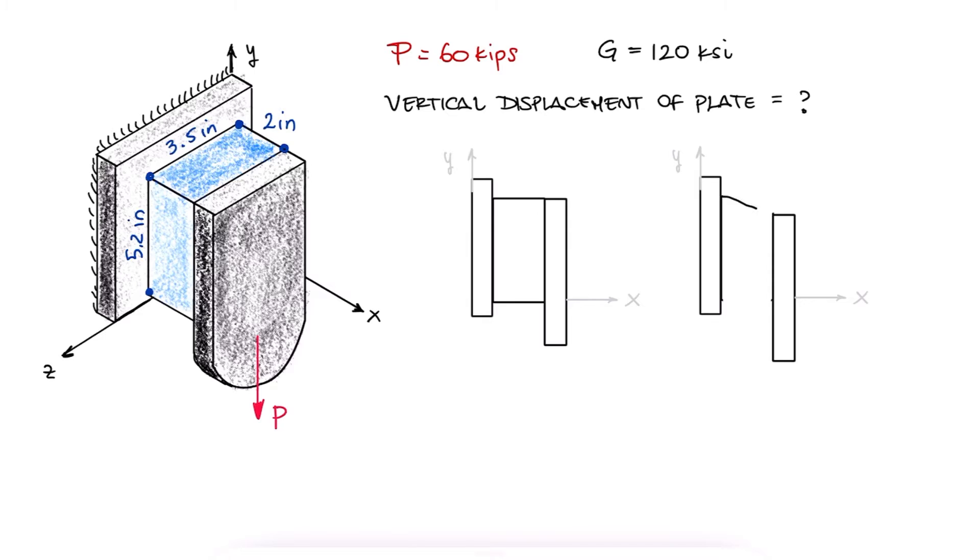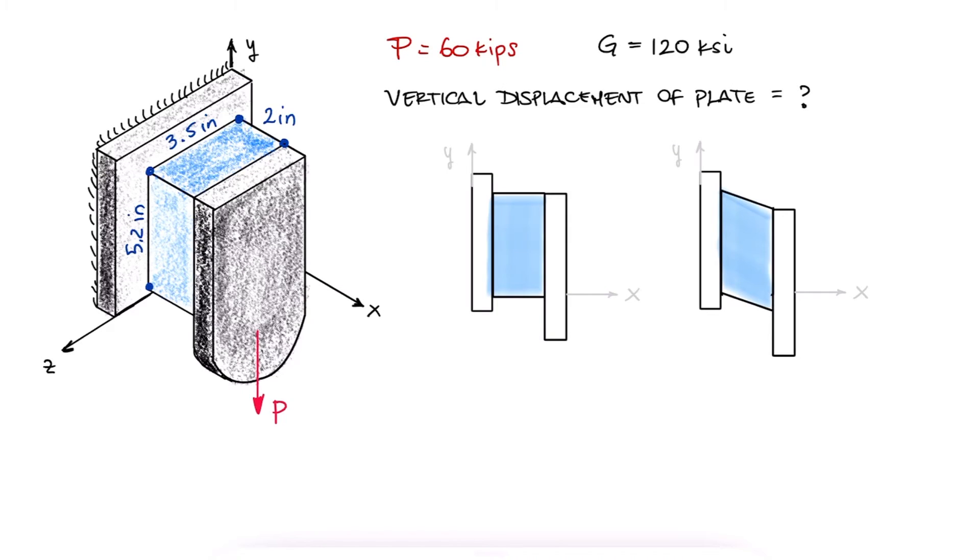we'd see that because of the deformation of the rubber block caused by the subjection of the plate to a load P, the plate would have moved vertically a distance h.